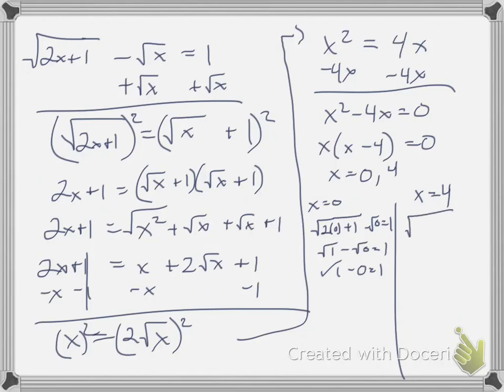Okay, plug in the 4. 4 times 2 is 8. Plus 1. Minus square root of 4 equals 1. This becomes square root of 9 minus square root of 4 equals 1. 3 minus 2 is equal to 1. This one works as well. So in this case, both of them worked. So my solution is both of them. X equals 0 and 4.